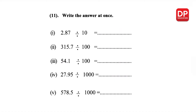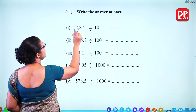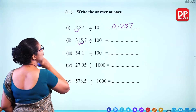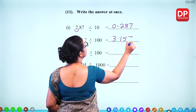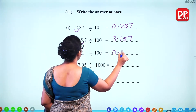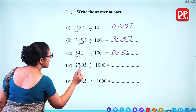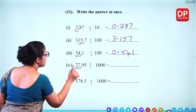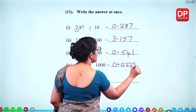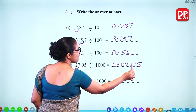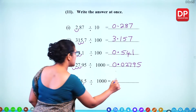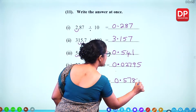Write the answer at once with different numbers. Divide by 10 — only one place to the left. Divide by 100 — two places to the left. Divide by 100 — two places to the left — gives 0.541. Divide by 1000 — three places to the left, put a zero there — gives 0.02795. Divide by 1000 — move the decimal place three places to the left — gives 0.5785.